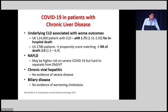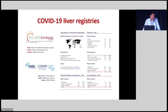Underlying chronic liver disease is associated with worse outcomes in COVID-19. UK studies show an adjusted hazard ratio of 1.75 for in-hospital death among patients with chronic liver disease and COVID-19 compared to controls. US data shows a relative risk of death of 3 for COVID-19 with chronic liver disease versus controls. NAFLD patients may be at higher risk, but it is difficult to separate from associated metabolic co-morbidities like diabetes and hypertension. Two international registries — SECURE-Cirrhosis and the COVID-HEP registry — provide important ongoing data.